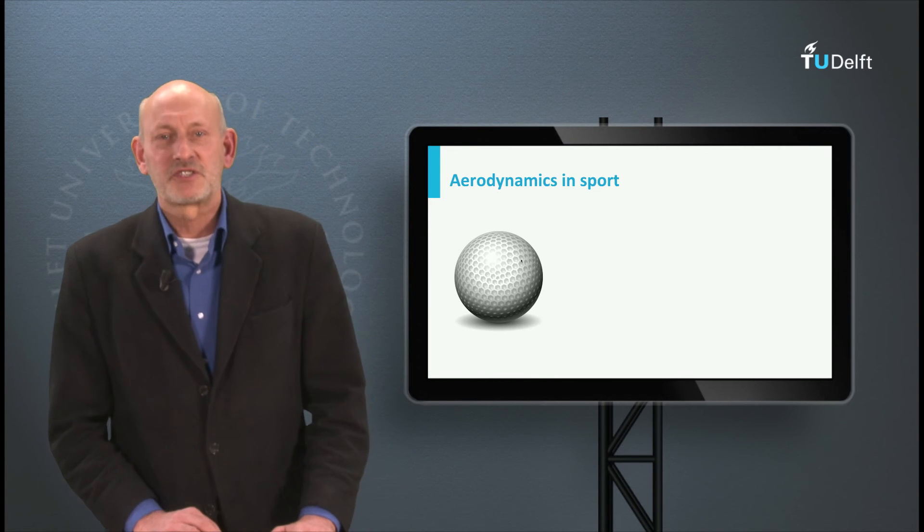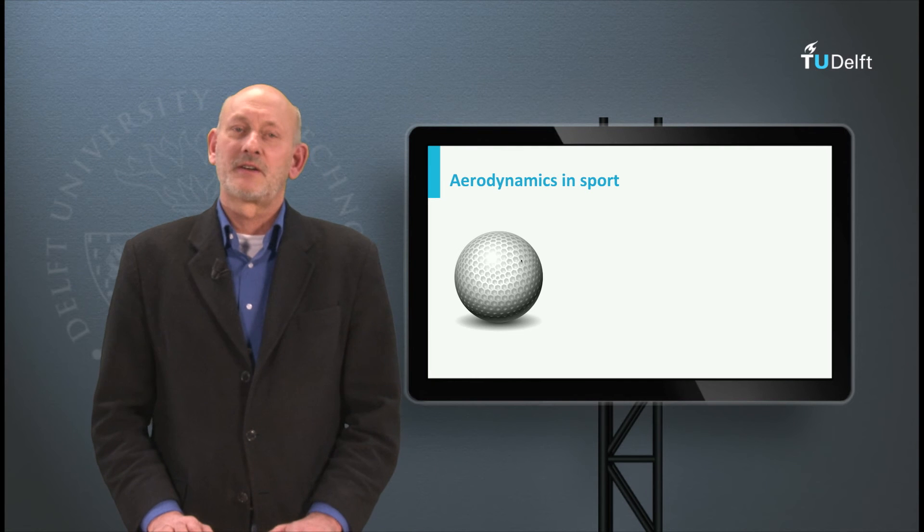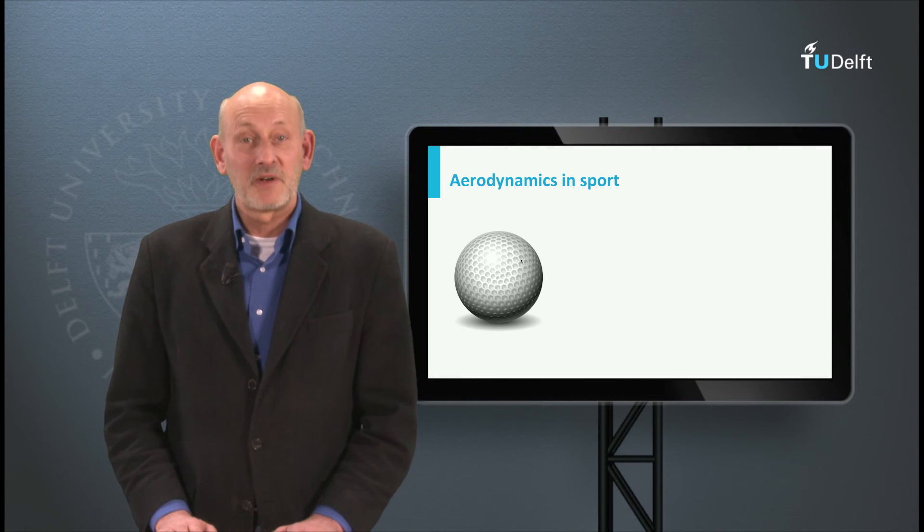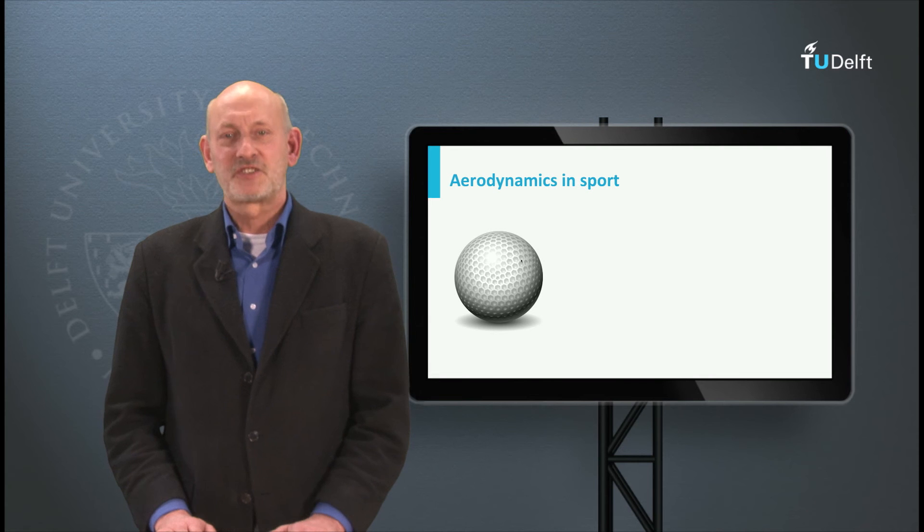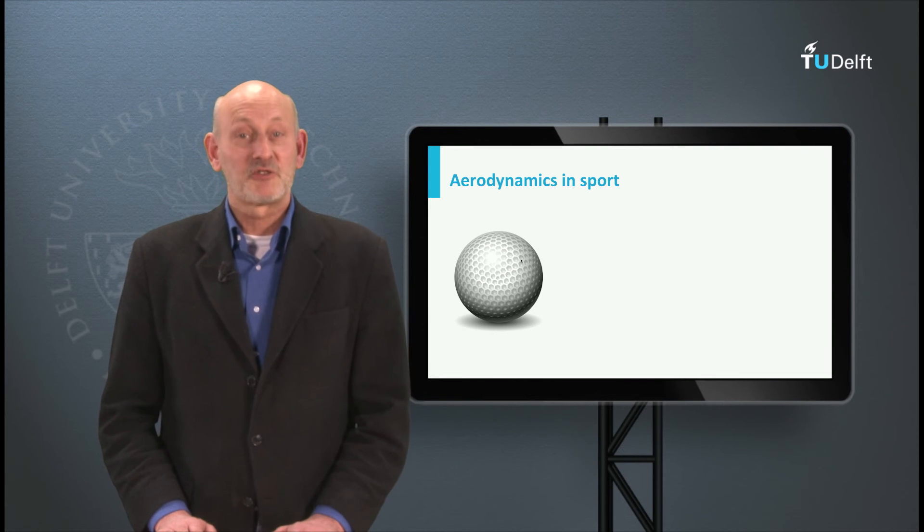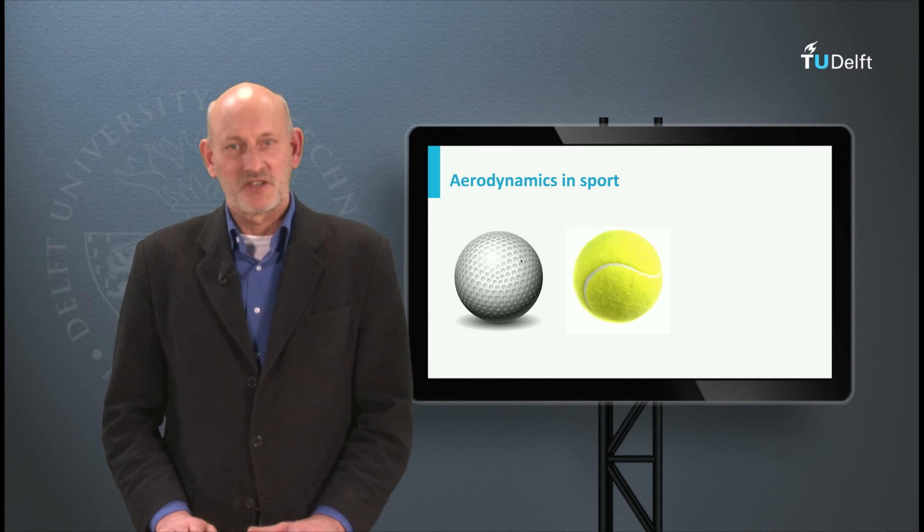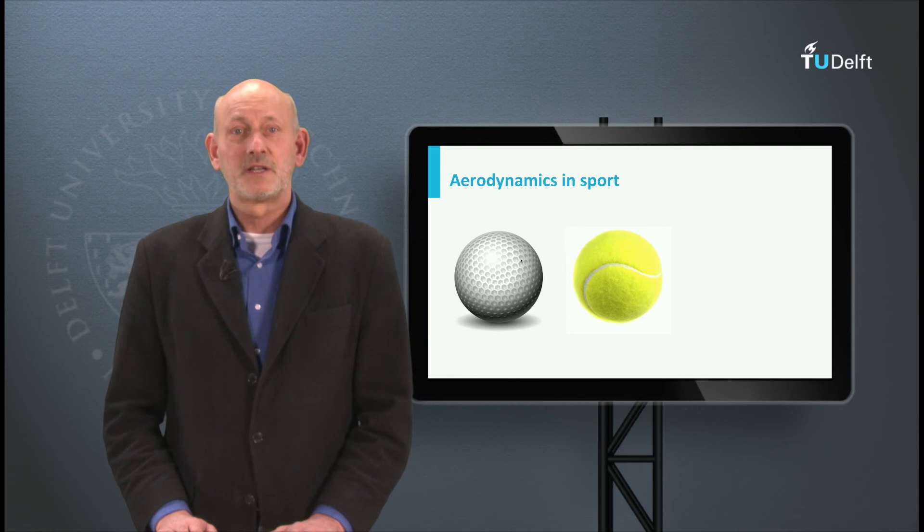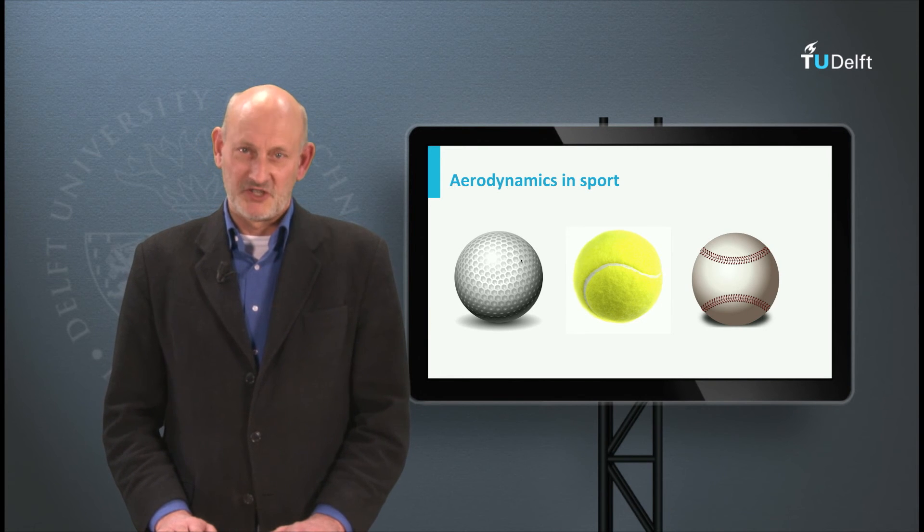What I've told you about cylinder is also true for a sphere. These phenomena have an application in sports as well. A golf ball has dimples, so that it will have a higher speed, a tennis ball is hairy and has grooves, and a baseball has rough stitches, all for the same reason.